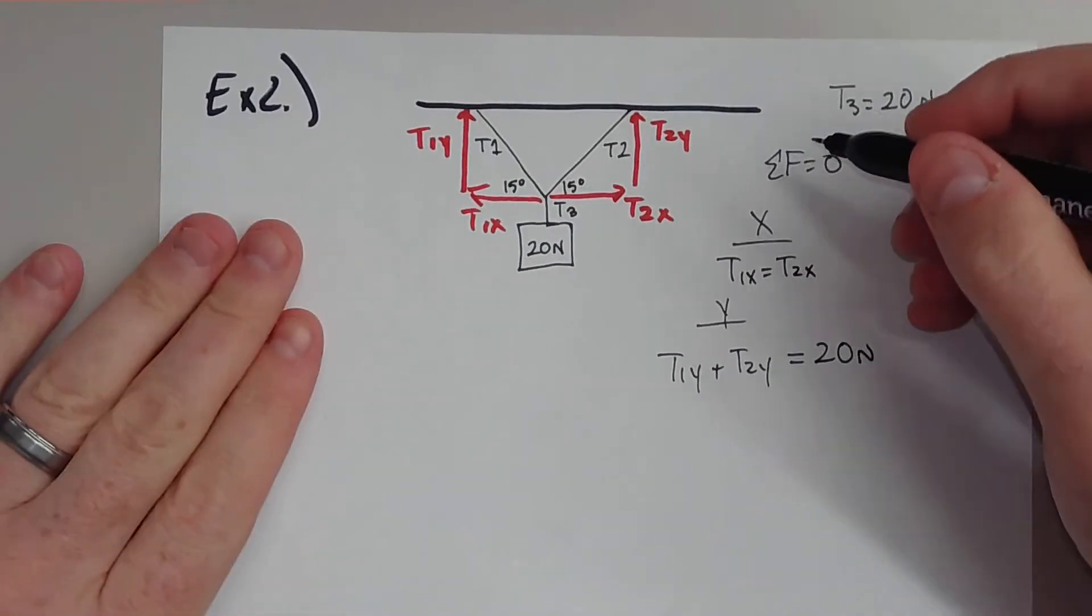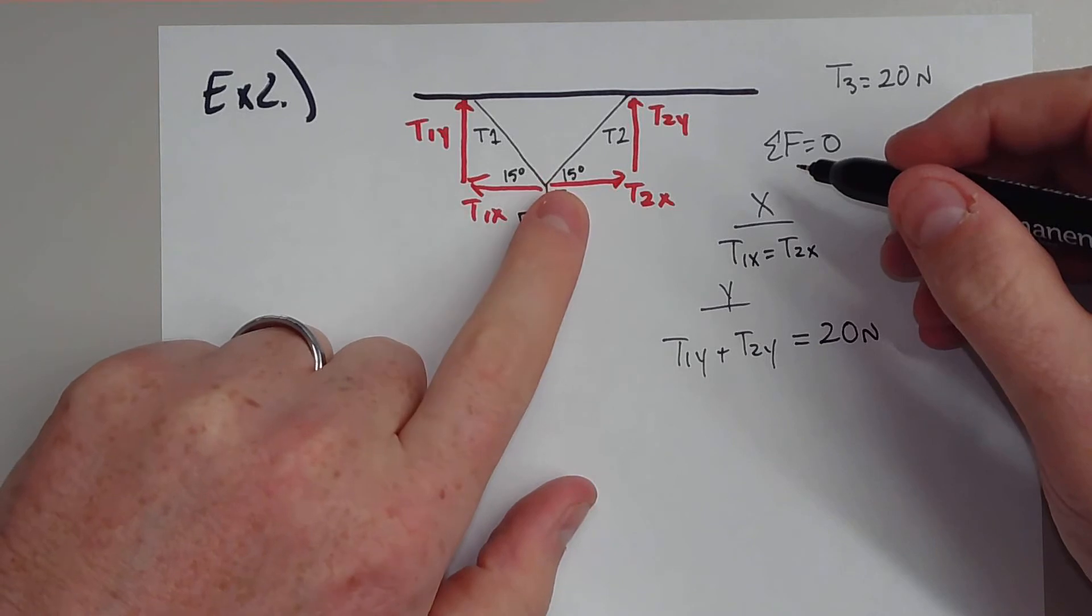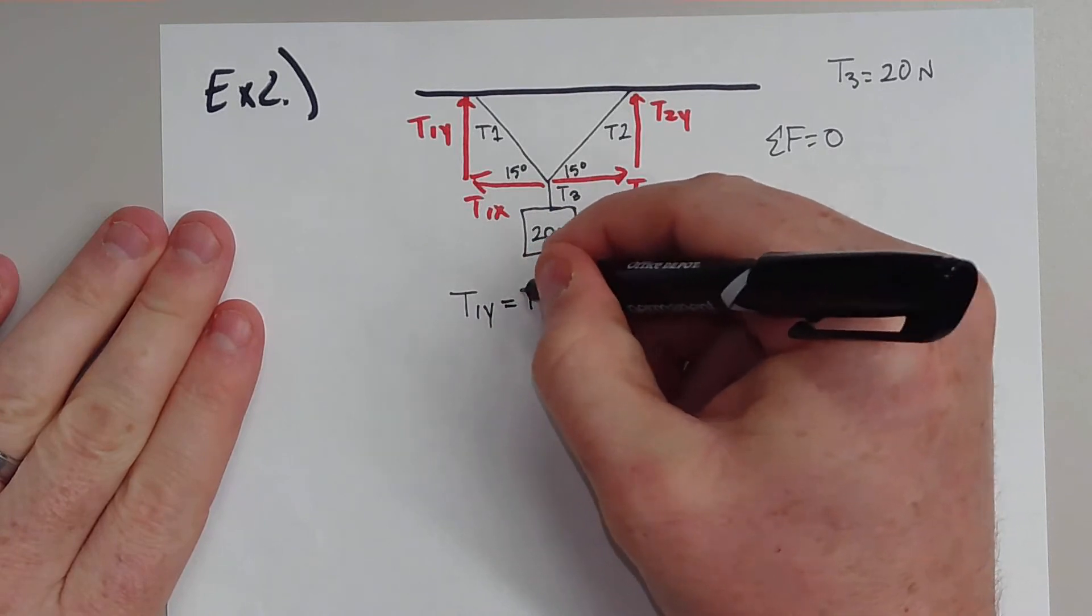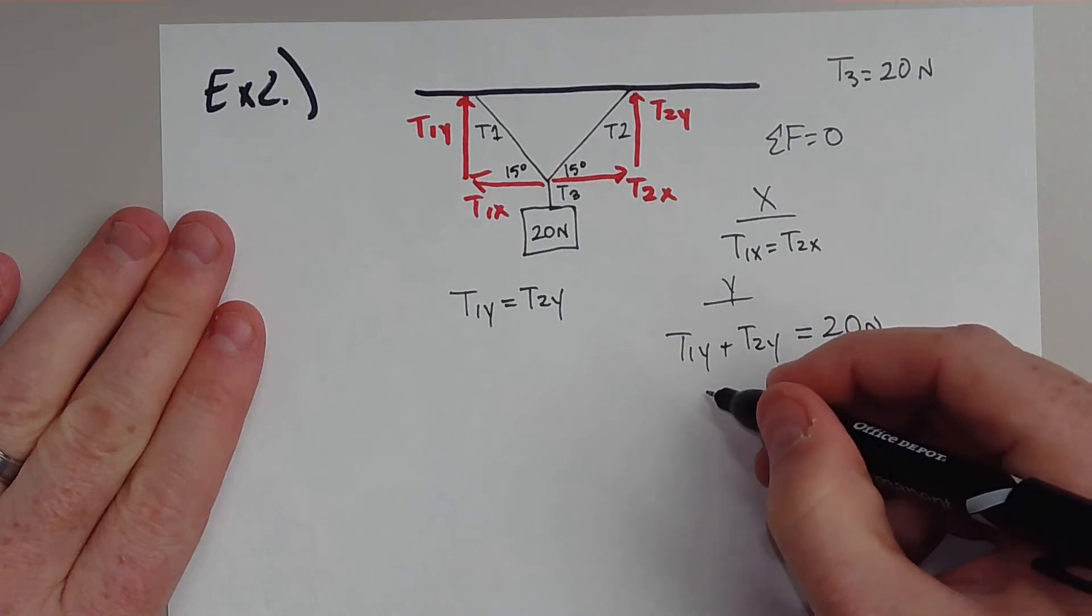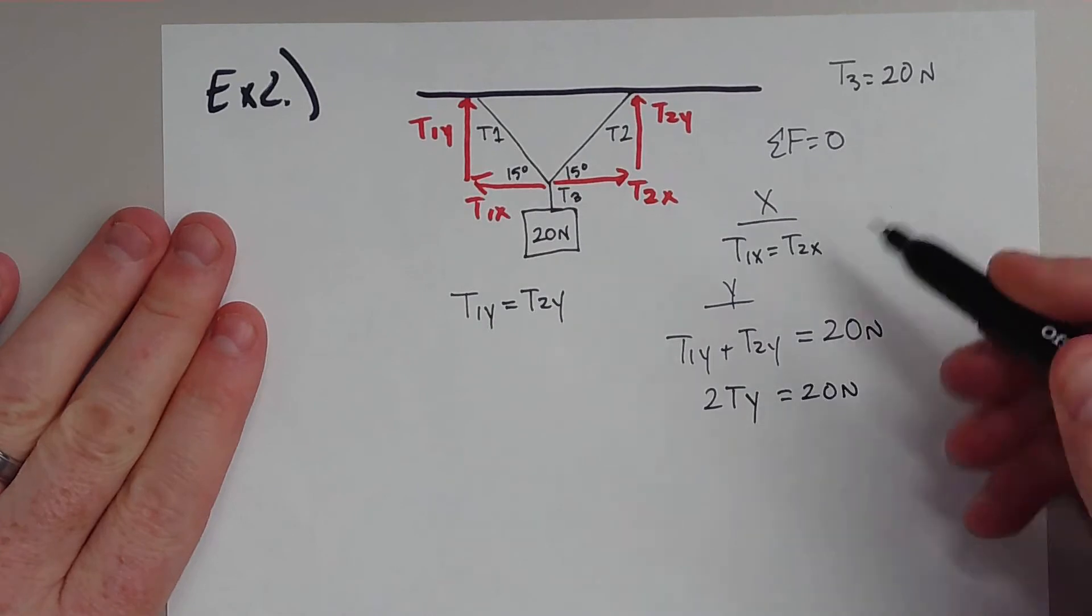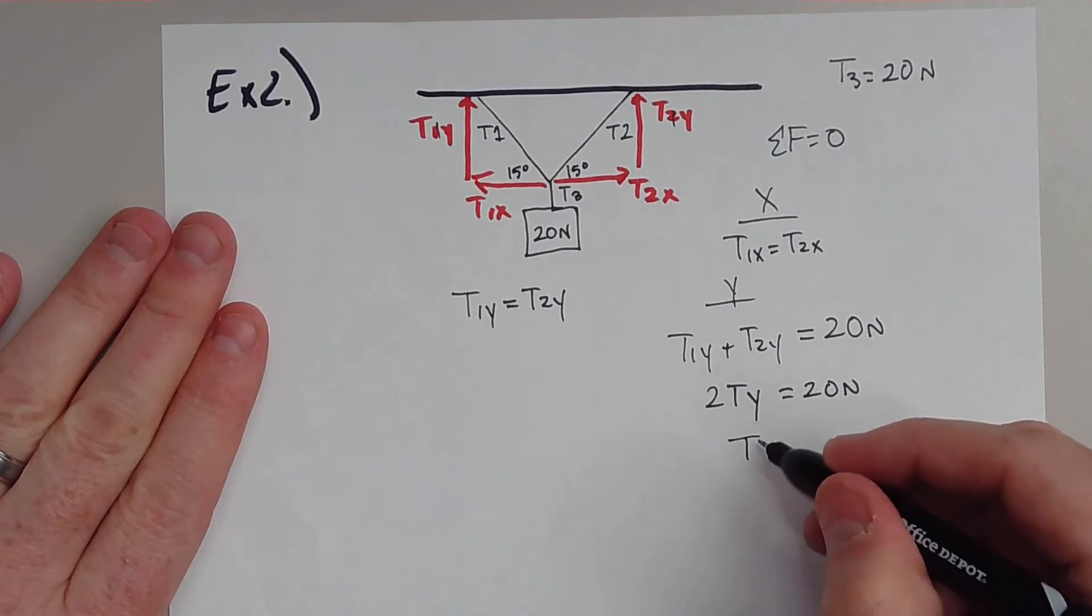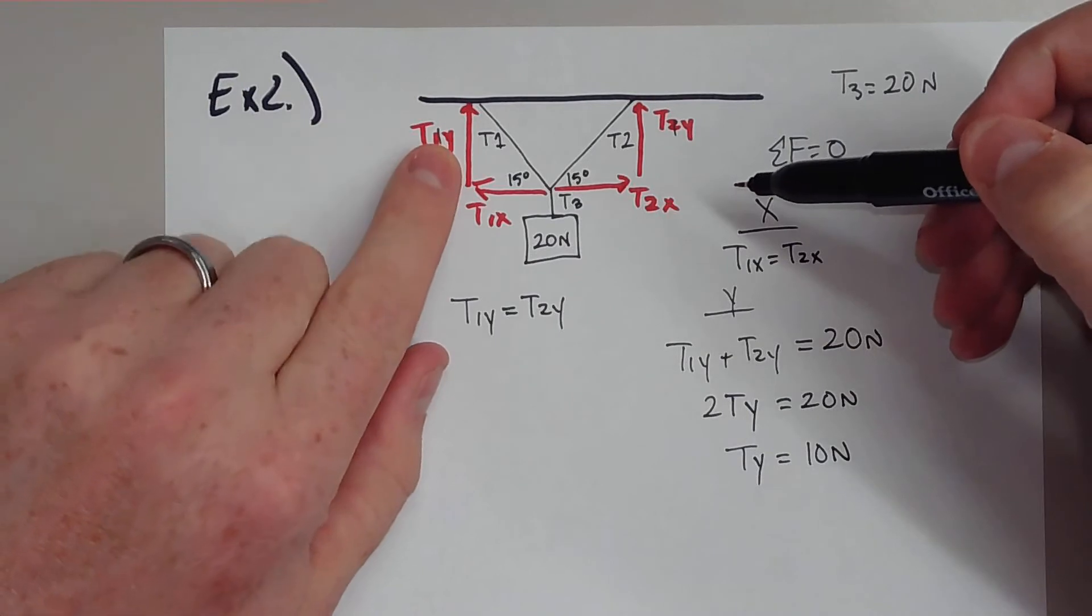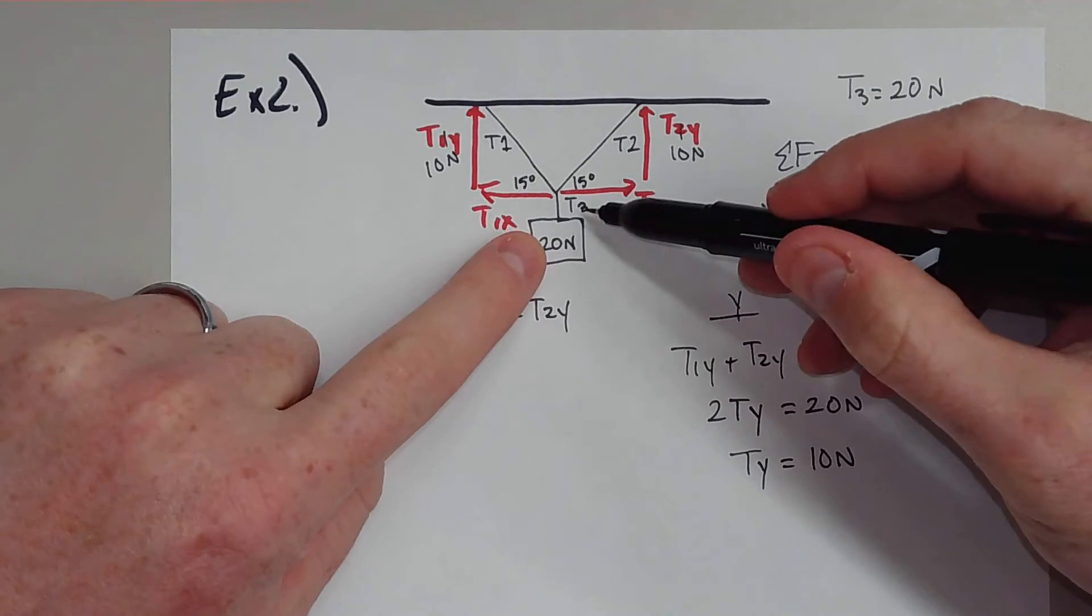Now, a fun tip, fun fact. If we know that these two angles are identical, that means the vertical components will be the same. So in this case, T1Y is equal to T2Y. So really, we can actually just write this as two tensions in the Y direction equals 20 newtons. So the tensions in the Y direction will just be 10 newtons each. And that makes sense. This has to support 10 newtons, and this side has to support 10 newtons.